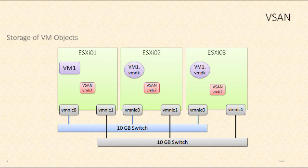For each virtual machine, the data is broken down into different objects. Virtual machine one has a VMDK — that's one object. Other objects include the VSWAP file, snapshots, or the home namespace of a VM, which includes the VMX files. vSAN takes all of these objects that make up our virtual machine and mirrors them to multiple ESXi hosts. If ESXi 02 were to fail — where VM one's VMDK resides — it's also been mirrored to ESXi 03, so VM one can tolerate a single host failure without data loss.